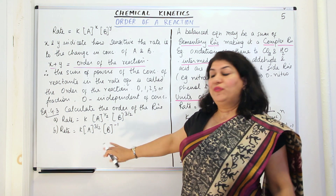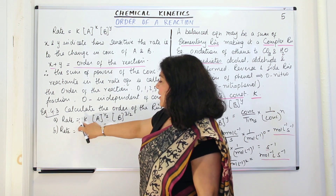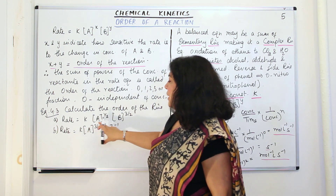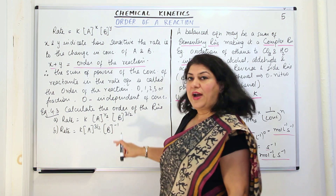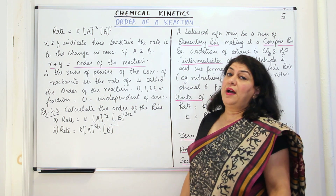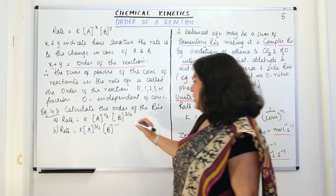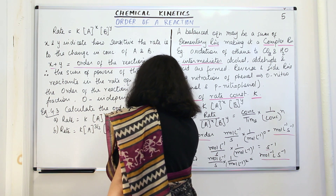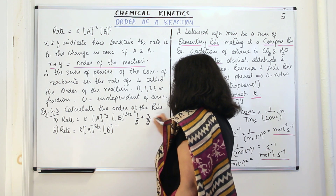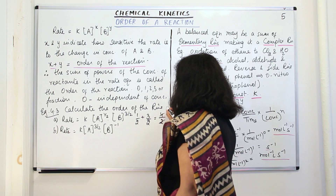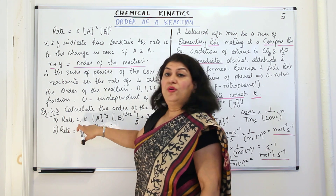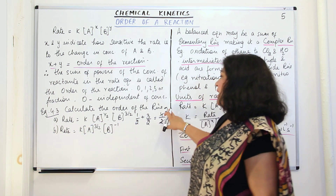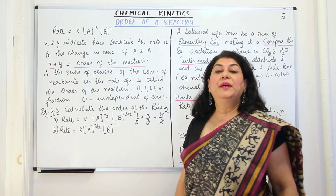This is example 4.3 of your NCERT textbook. The question is that rate equations are given and you have to calculate the order of these two reactions. For the first reaction, rate is equal to K times [A] to the power of half and [B] to the power of three halves. So the sum is one-half plus three-by-two, which equals four-by-two, which is two. Therefore the order of reaction A is two — this reaction is a second-order reaction.